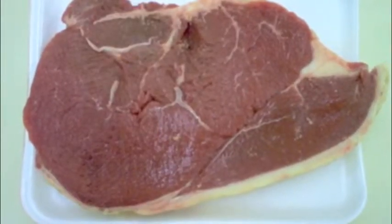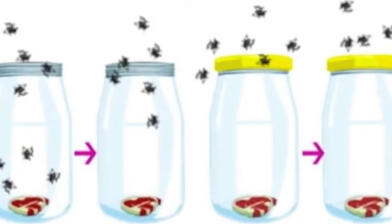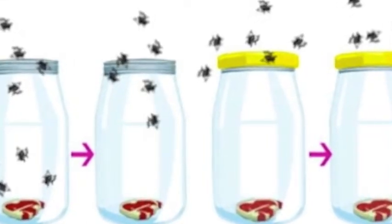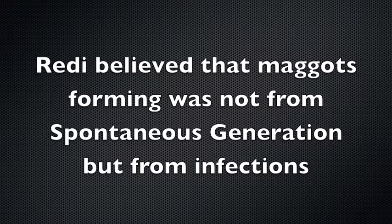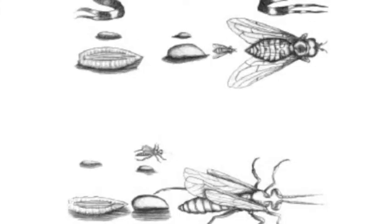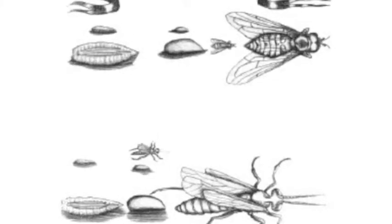Brady's hypothesis was that maggots didn't form in a sealed jar covered with paper. Brady also believed that maggots formed because of infections and not because of spontaneous generation, as maggots are formed by flies, which lay eggs on the meat and later infect the eggs.